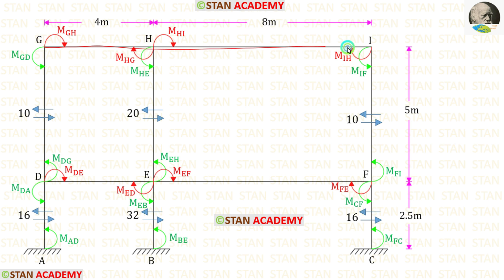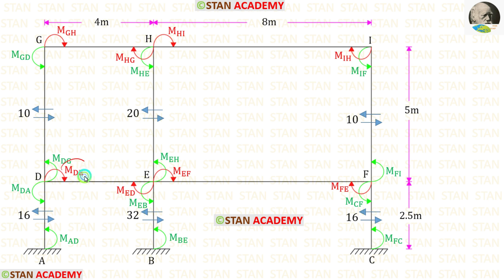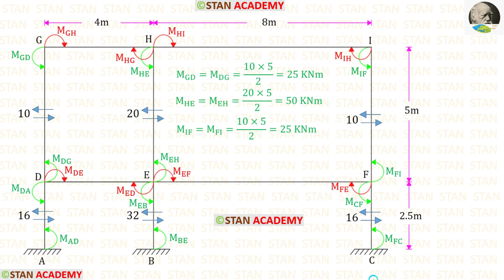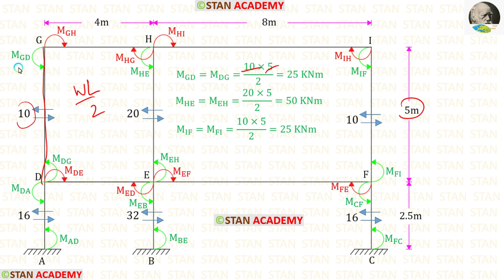In the portal frame method, the moments in the beams in each story will be the same. For example, M_GH, M_HG, M_HI, and M_IH will all be equal. Now let us find the moments in the columns using the formula wl/2. For member GD, w = 10 and l = 5, so M_GD = M_DG = 10 × 5 / 2 = 25 kNm.